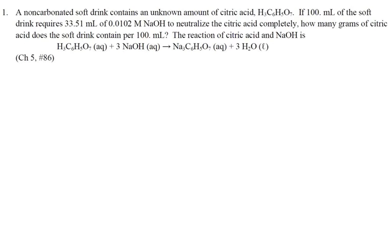A non-carbonated soft drink contains an unknown amount of citric acid. If 100 milliliters of the soft drink requires 33.51 milliliters of 0.0102 molar NaOH to neutralize the citric acid completely, how many grams of citric acid does the soft drink contain per 100 milliliters? The reaction is given. So what do we really have to start with? We really have 33.51 milliliters of this NaOH solution.